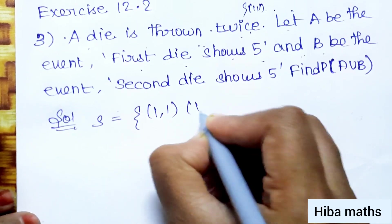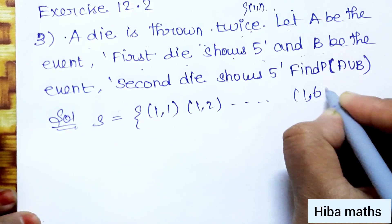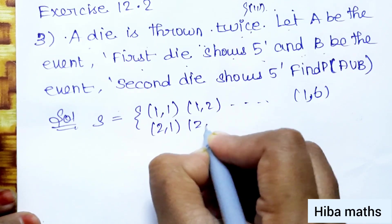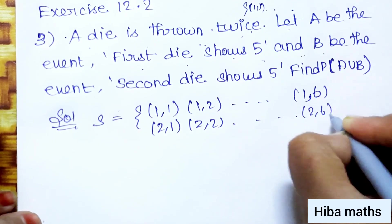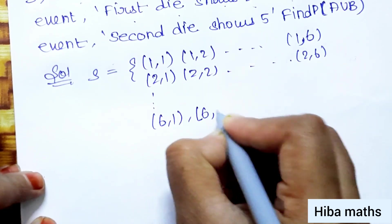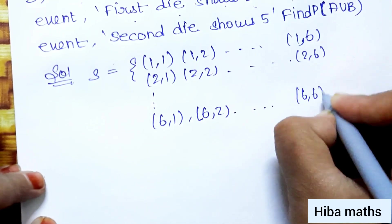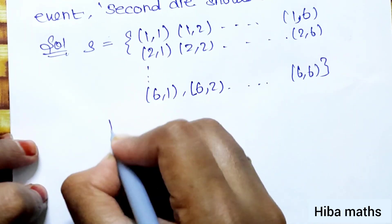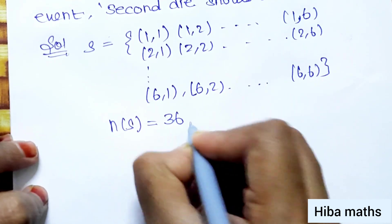The sample space S is equal to: 1,1; 1,2 up to 1,6; then 2,1; 2,2 up to 2,6; continuing through to 6,1; 6,2 all the way till 6,6. The total is 36 outcomes, so N of S is equal to 36.